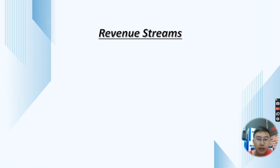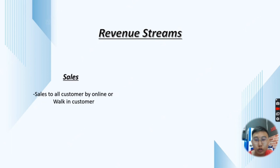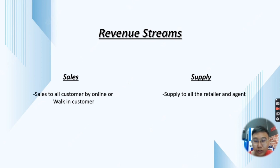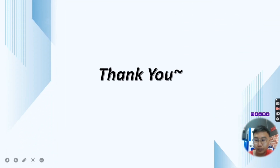Last, it's about our Revenue Streams. The revenue streams we get are from direct sales, shares, and supply. Shares are distributed to all customers online or to working customers. We also supply to all retailers and agents to get profit. This is our main revenue stream. Thank you.